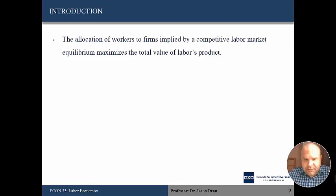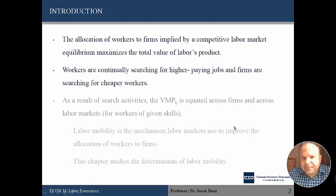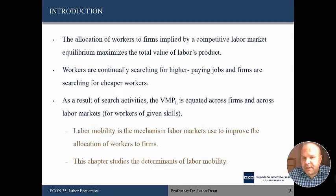Workers are continually searching for higher-paying jobs and firms are searching for cheaper workers. As a result of these search activities, the value of the marginal product of labour is equated across firms and across labour markets. If it wasn't equal, there could be ways of reallocating workers that would be an improvement. So labour mobility is a mechanism which helps labour markets improve the allocation of workers and firms, and this chapter studies its determinants. Labour mobility is very important because it leads to an efficient outcome.